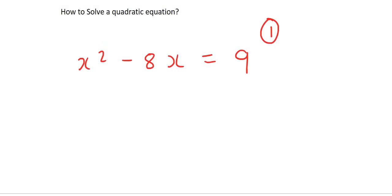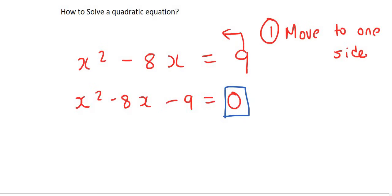Alright, step 1, move everything to one side. So for example, this 9, we're going to move over to the left, so it's going to become x squared minus 8x minus 9 equals to 0. When you see the 0, that's a good thing. You want the 0 on the left or the right. It doesn't really matter, but you do want that 0.